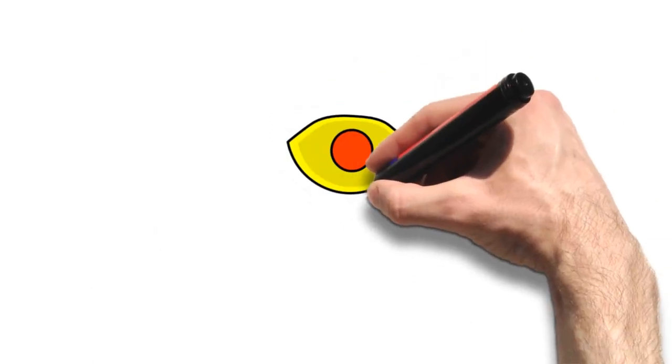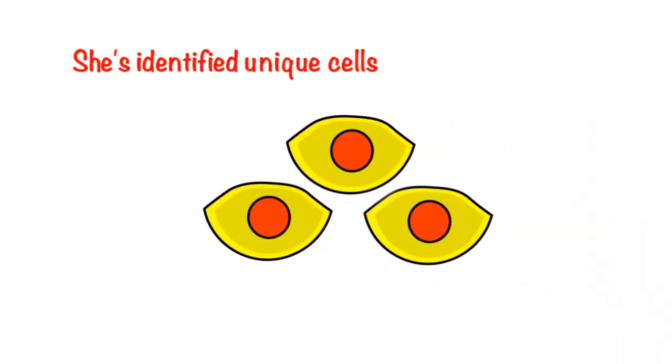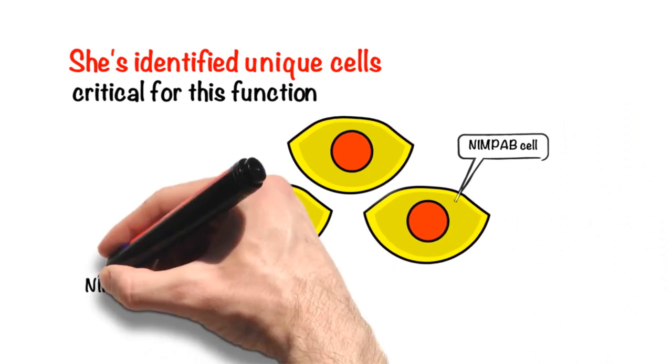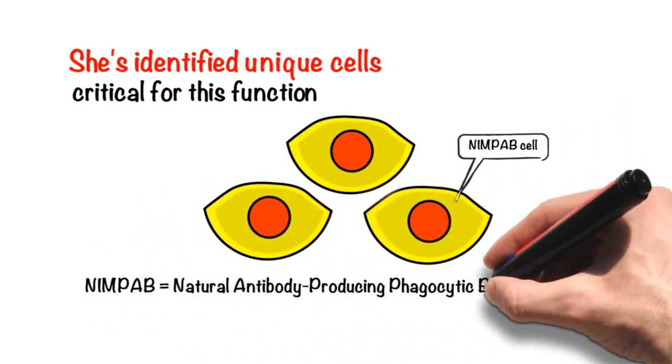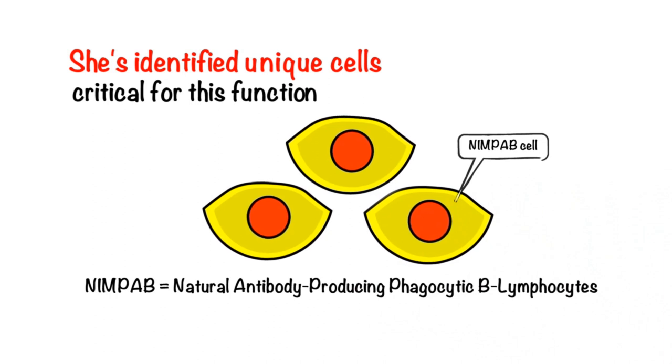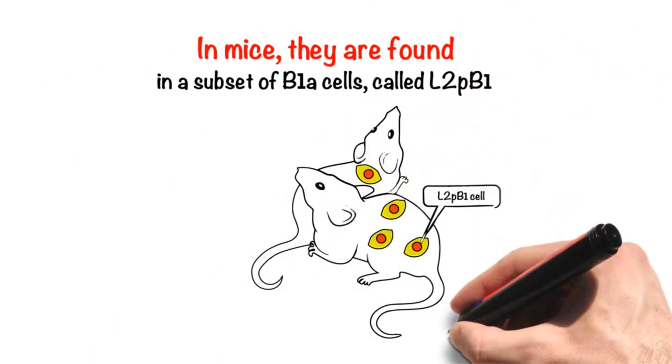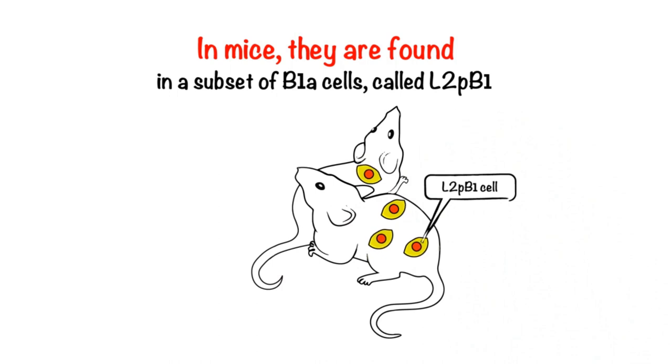To do this, she's identified unique cells critical for this function. These cells are called NIMPAP cells, short for Natural Antibody Producing Phagocytic B Lymphocytes. In mice, they are found in a subset of B1A cells, called L2PB1.